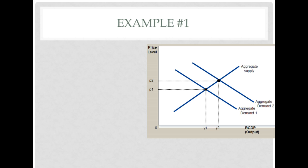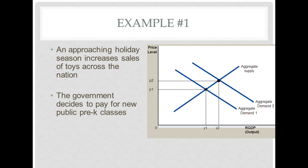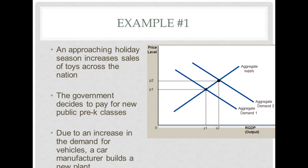For example, an approaching holiday season increases sales of toys across the nation — that counts as consumption, which means aggregate demand increases, so prices and RGDP increase. If the government decides to pay for a new public pre-K class, that is government spending and also increases aggregate demand. Due to an increase in the demand for vehicles, a car manufacturer builds a new plant — that sounds like investment, and again that would increase aggregate demand.